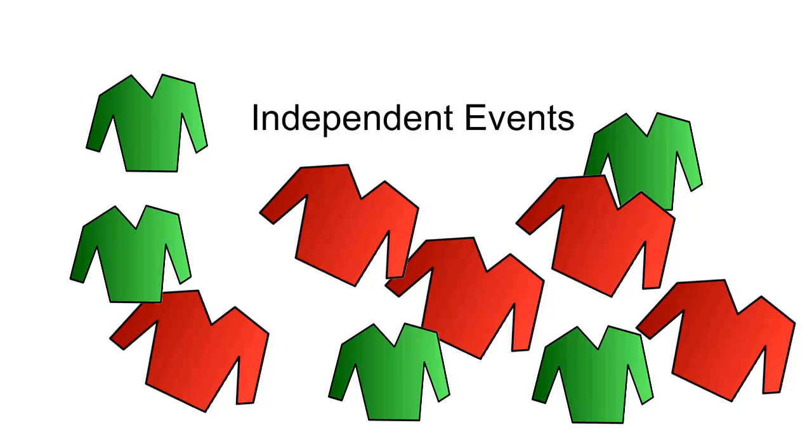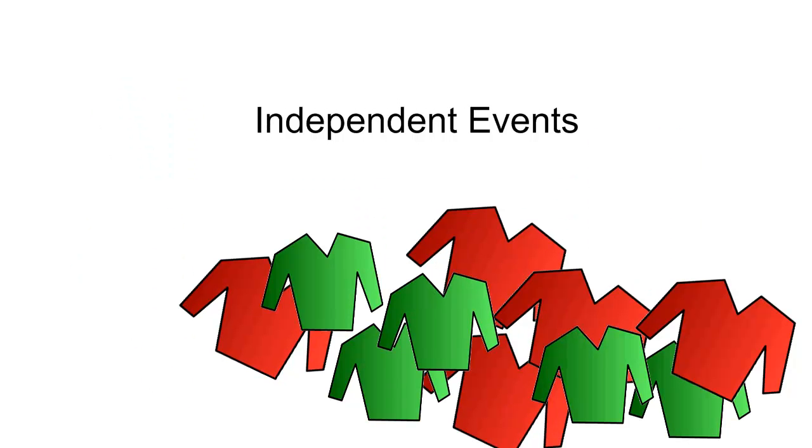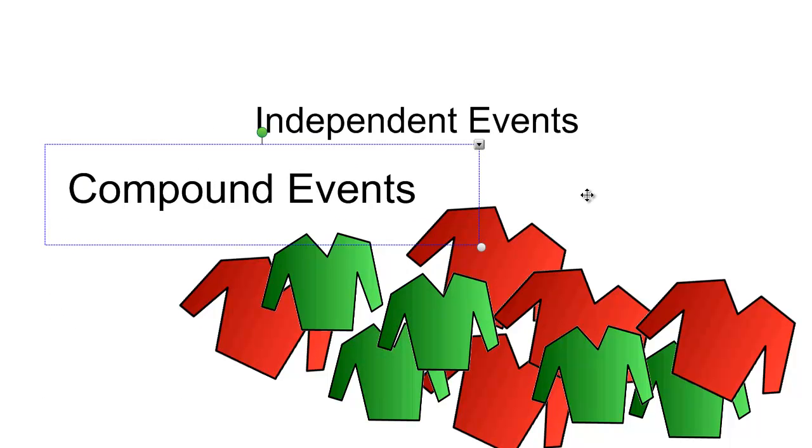In probability, we talk about some events being independent events. In independent events, we're generally always talking about compound events—in other words, an event followed by another event.